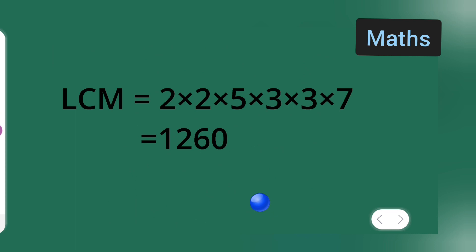LSM is equal to 2 multiplied by 2 multiplied by 5 multiplied by. So, multiply all this and you will get 1260. Okay. So, this is the LSM. Okay. This is the way how we find the LSM. And I hope you all have understood this. And thanks for watching.